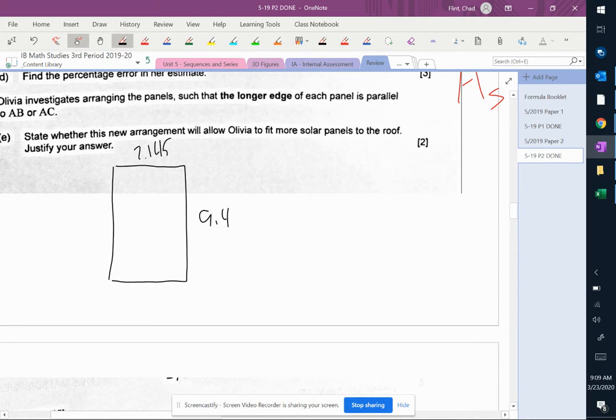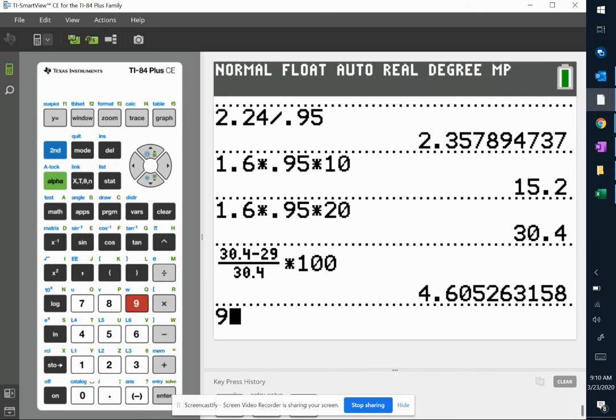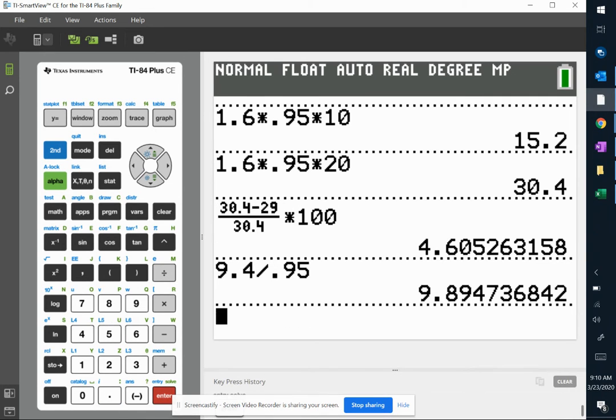We're going to swap around. So we're going to divide 9.4 by 0.95. It's only going to let us fit 9 that way.